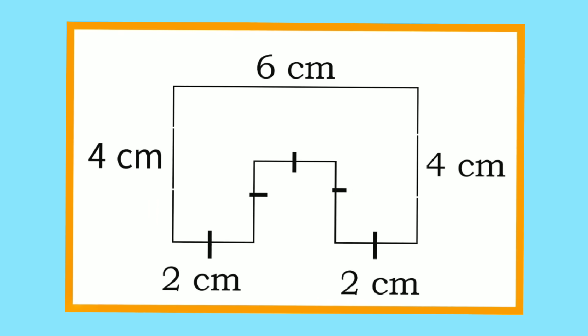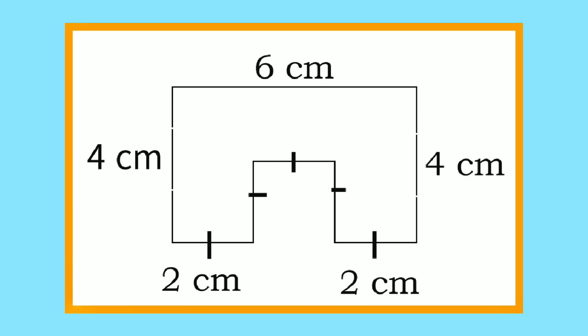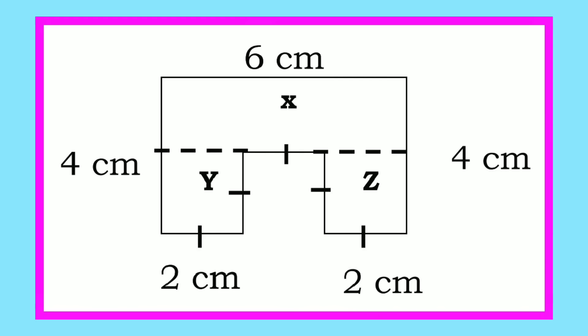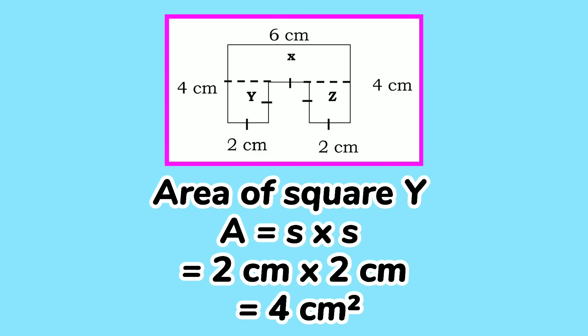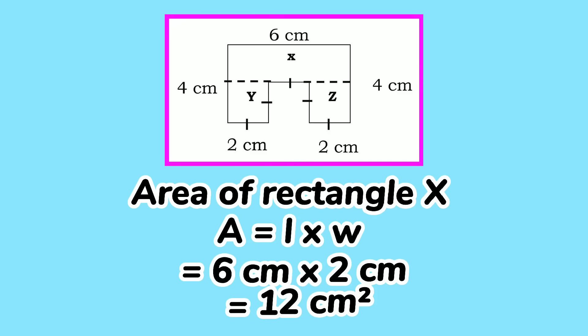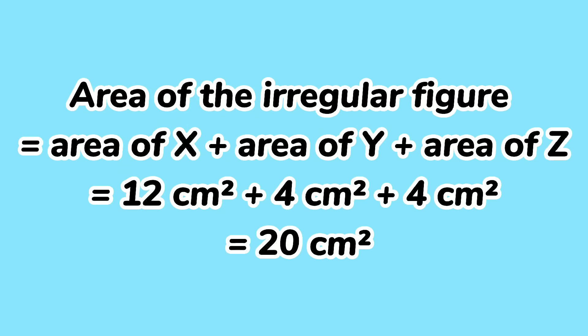How about this figure? How can you break it up into rectangles and or squares? The rectangle formed is labeled X and the 2 squares formed are labeled Y and Z. Let's solve for the area of Square Y: 2 times 2 is 4 square centimeters. Area of Square Z is also 4 square centimeters. For the area of Rectangle X: 12 square centimeters. How did you get 2 centimeters? We subtracted 2 centimeters from 4 centimeters, which is the original length. So the area of the irregular figure: 12 plus 4 plus 4 gives you 20 square centimeters.